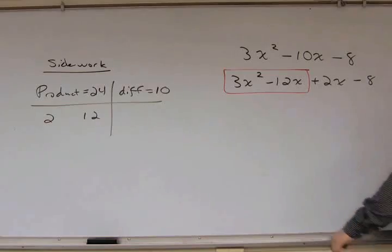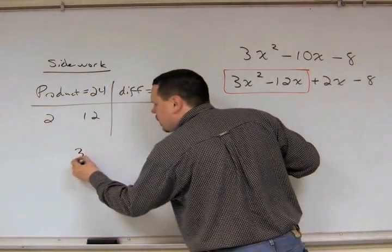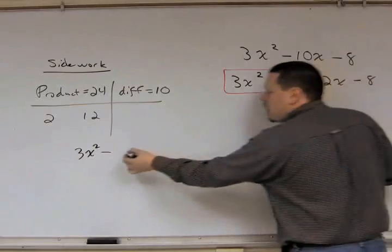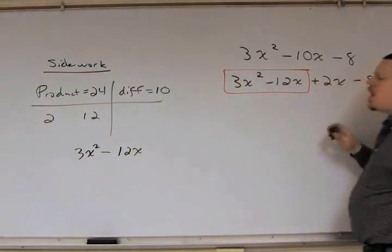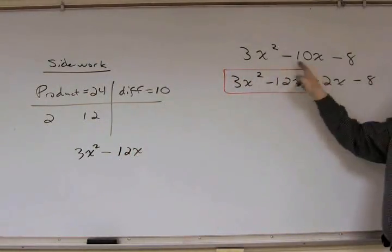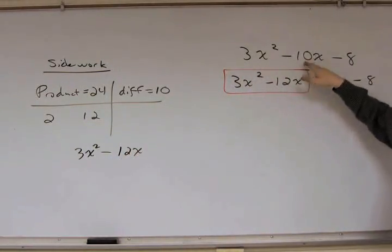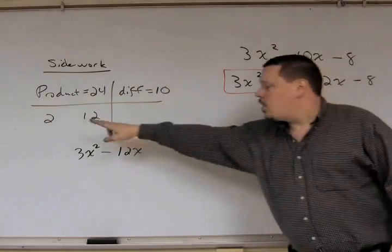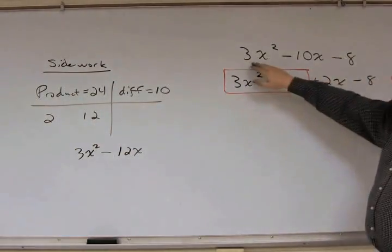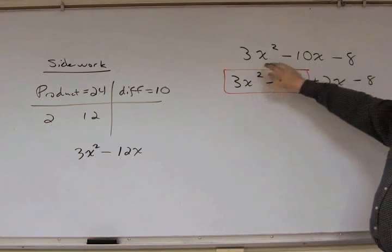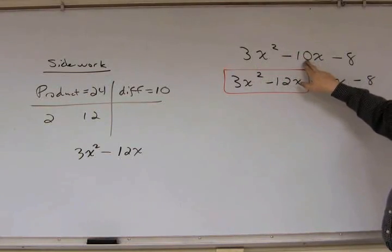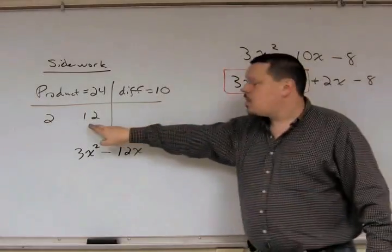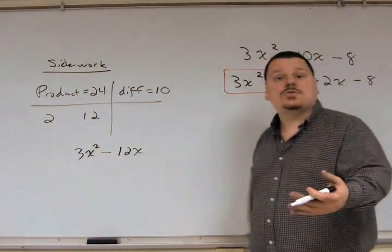So right now, I'm just having you focus on the 3x squared, which is your very first term, minus 12x, which is almost your very first two terms here. The only difference is you're replacing this coefficient of your middle term with the larger of the two. So you write down the first term and the second term, but you're replacing this number, this coefficient, this 10 here, with the 12, which is your larger of your two numbers.